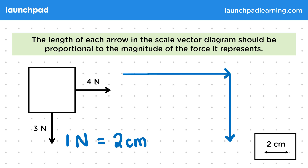These might not be to scale on your screens, but the 4 newton force is represented by an 8 centimetre arrow, and the 3 newton force by a 6 centimetre arrow.